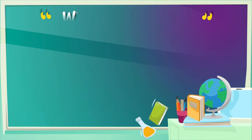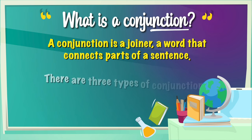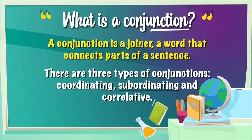So, what is a conjunction? Well, a conjunction is a joiner — a word that connects parts of a sentence. There are three types of conjunctions: coordinating, subordinating, and correlative. Today we're going to look at the subordinating conjunctions, also called subordinate conjunctions.